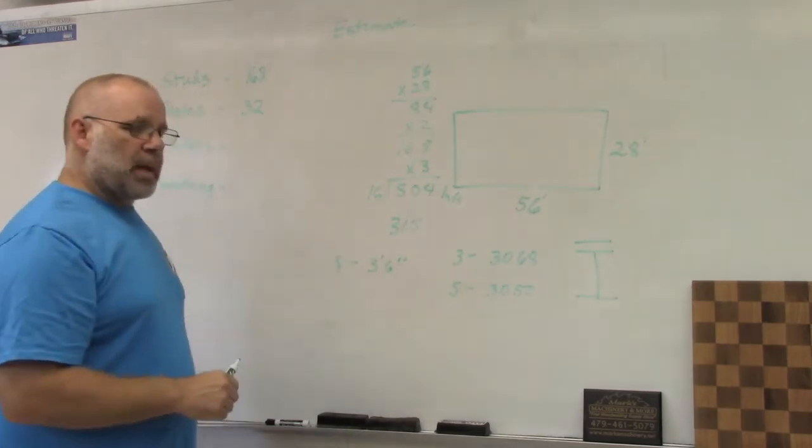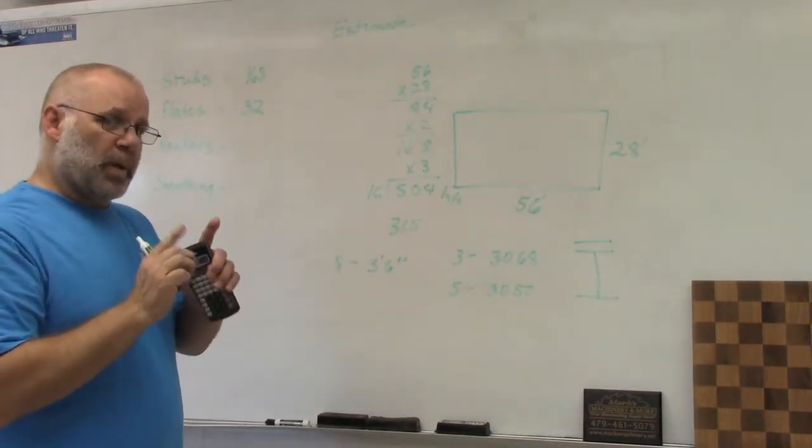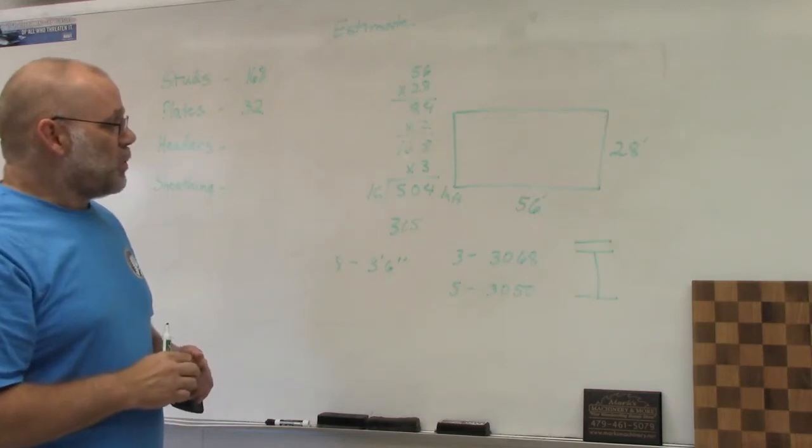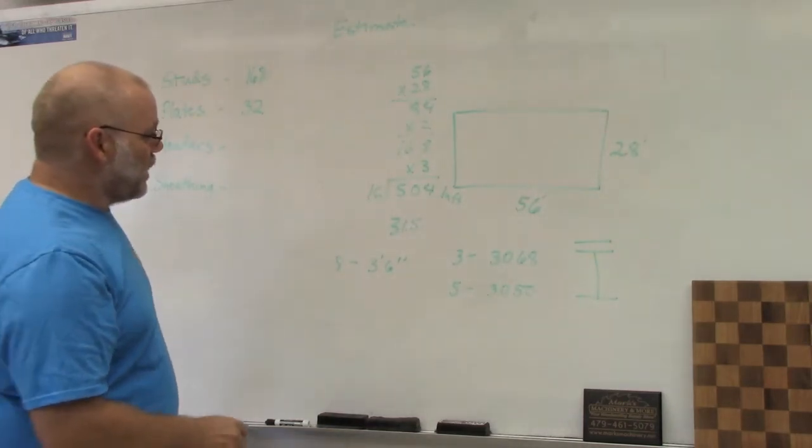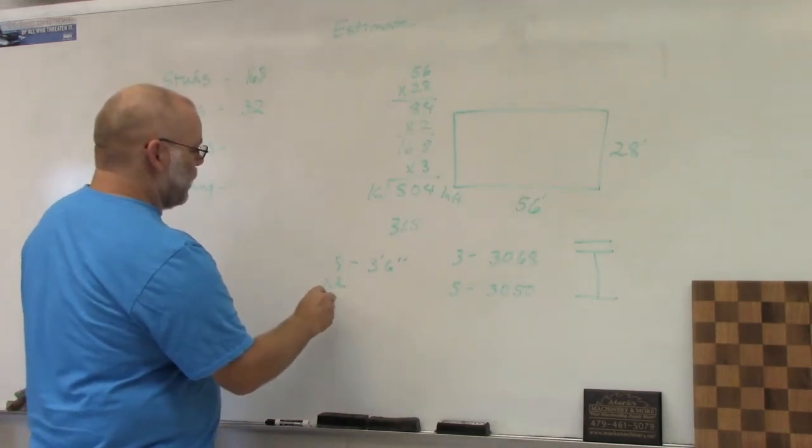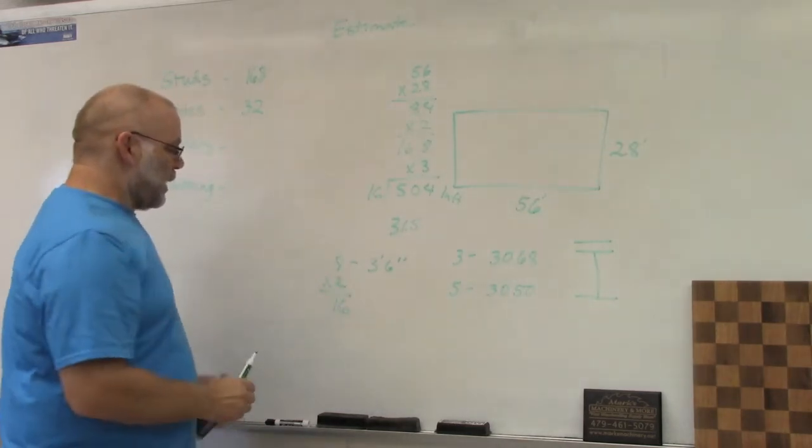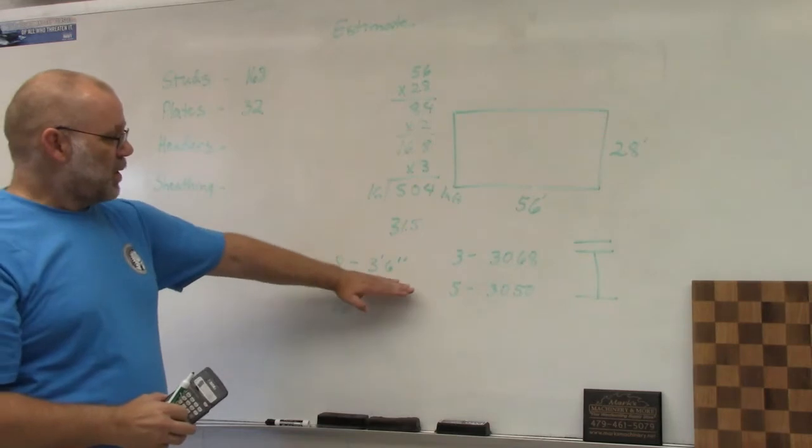I need eight of those, but when making up a header it's two pieces with an OSB spacer in it, so I have to double the amount of pieces that I need. I multiply that times two, so I need 16 pieces three feet six inches.